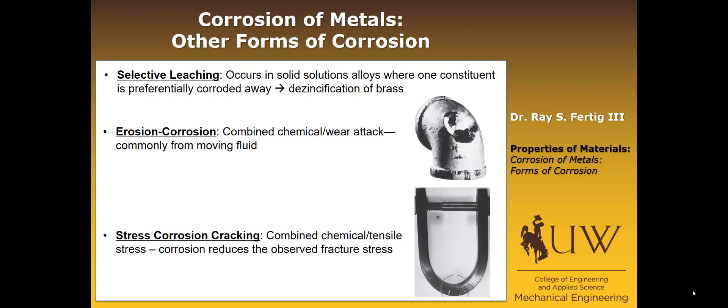Erosion corrosion is simply combined chemical corrosion with additional wear, commonly from a moving fluid. What you're looking at is an elbow where the fluid has impinged on the elbow to turn it, and that has enhanced the rate of corrosion by combining corrosion with wear.